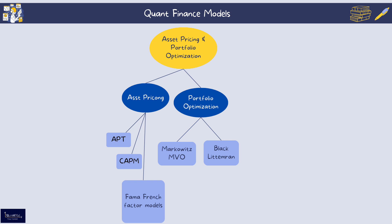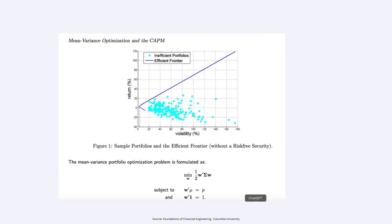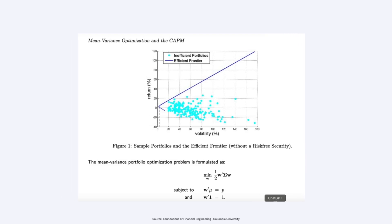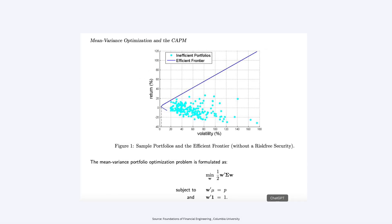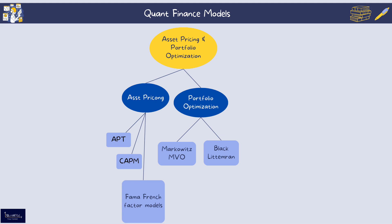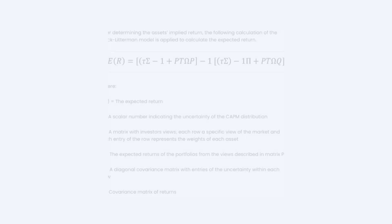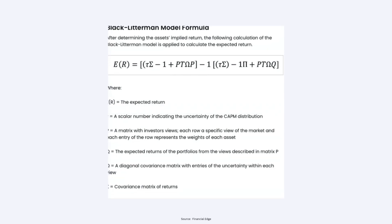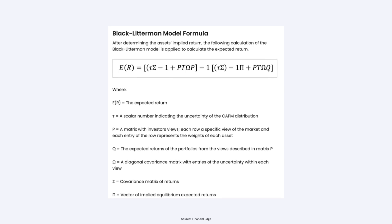The portfolio optimization part has two very famous models. The Markowitz Mean-Variance Optimization model is a portfolio construction technique that aims to optimize the trade-off between expected return and risk, leading to the efficient frontier of optimal portfolios. The Black-Litterman model combines equilibrium market returns with investor views to produce a more stable and intuitive set of expected returns, and it can be used within mean-variance optimization.